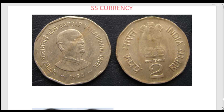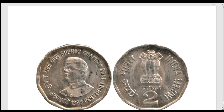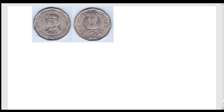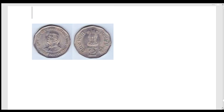But the 1997 Subhash Chandra Bose coin is not rare. Only the 1996 coin is rare. By mistake, it was actually minted in 1997. The coin dated 1996 belongs to the 1997 mint. It is 100 years of Subhash Chandra Bose, which was completed in 1997, but by government mistake it was released in 1996.